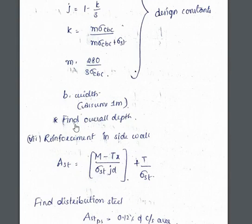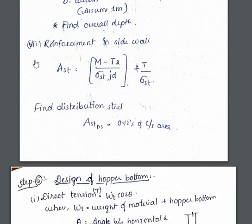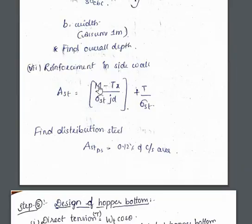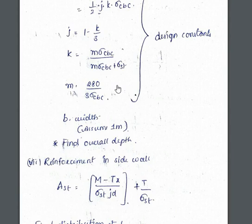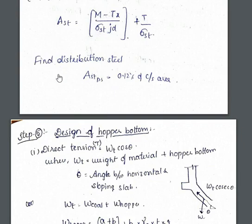We assume b = 1 meter and find the overall depth by assuming the effective cover. The reinforcement area Ast is given by: Ast = [M − T×(X)] / (sigma_st × j × d) + T / sigma_st, where sigma_st is the permissible tensile stress, j is the design constant, d is the effective depth, M is maximum bending moment, and T is maximum tension. Distribution steel is provided vertically at 0.12% of the cross-sectional area.